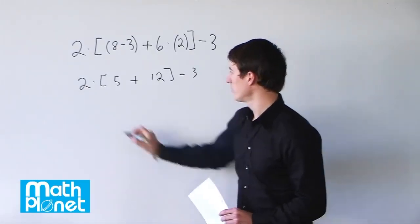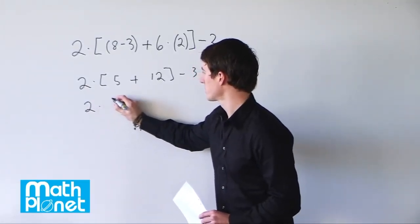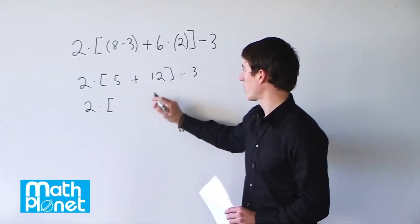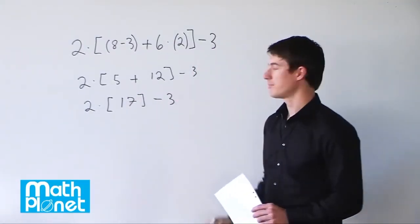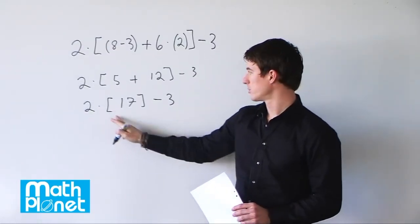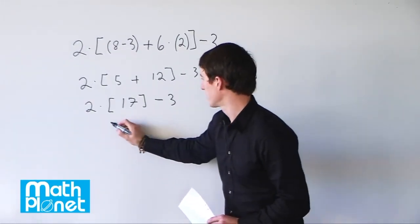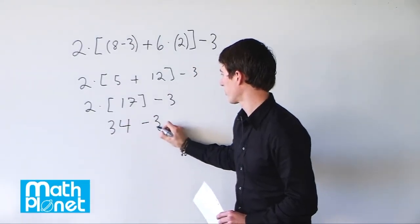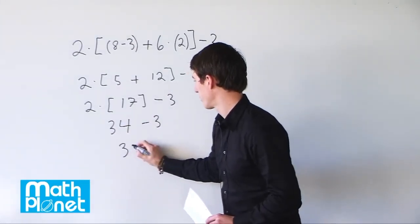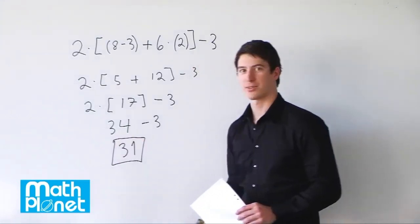Now we're going to add 5 and 12. So we still have 2 times bracket. 5 plus 12 is 17 minus 3 still. Now finally we can do 2 times 17. 2 times 17 becomes 34. And 34 minus 3 is just 31. And there's our final answer.